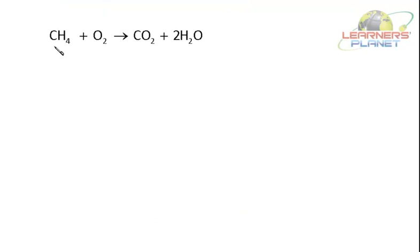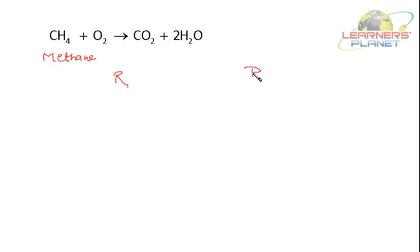Now let's balance this equation: CH₄ — that is methane — is burnt in air giving carbon dioxide and water. It's already given as CO₂ plus 2H₂O. Is this equation balanced? First, write the reactant side and the product side. What all elements are present? Carbon, hydrogen and oxygen. Carbon: 1 atom on the reactant side, 1 atom on the product side.